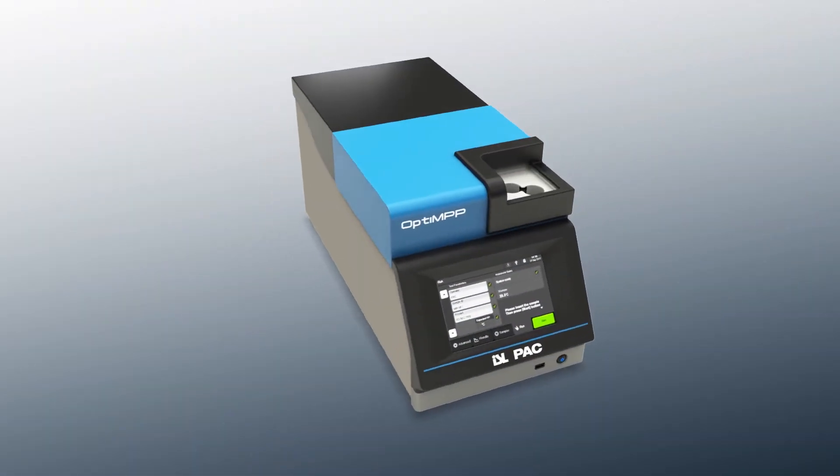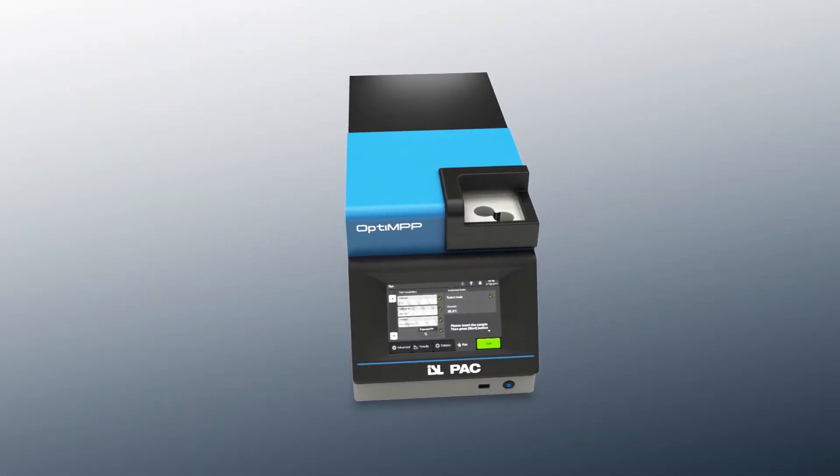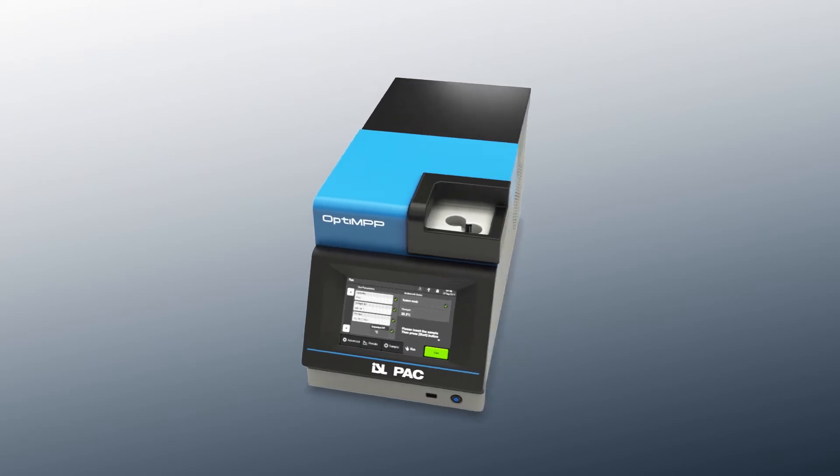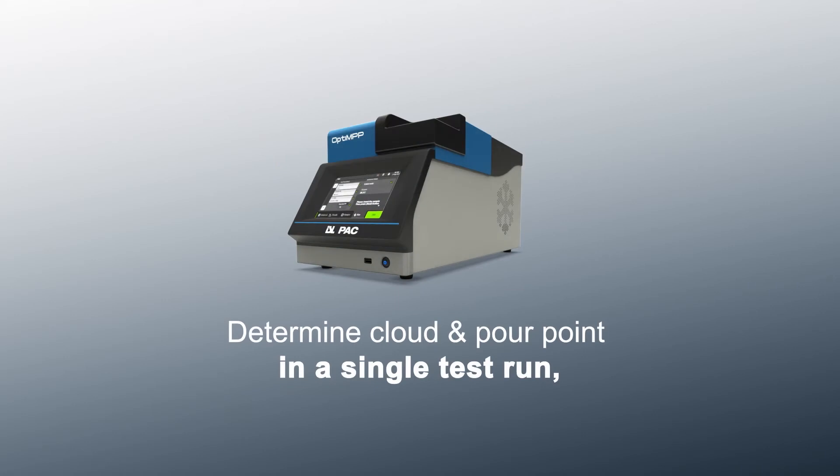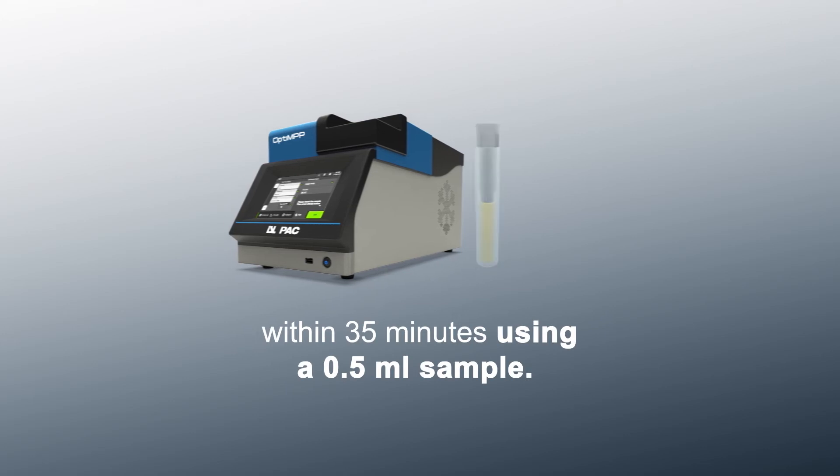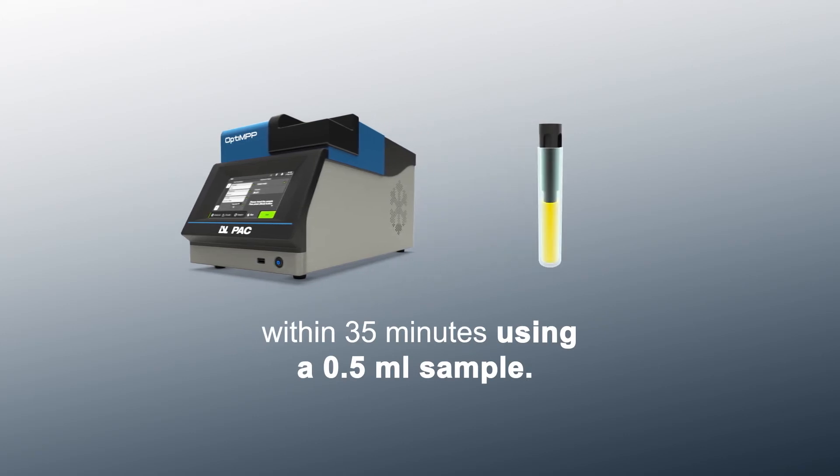OptiMPP has been designed to provide highly accurate cloud and pour point temperature of petroleum products down to minus 95 degrees Celsius. The analyzer determines cloud and pour point in one single test run within 35 minutes and using only 0.5 milliliter of sample.